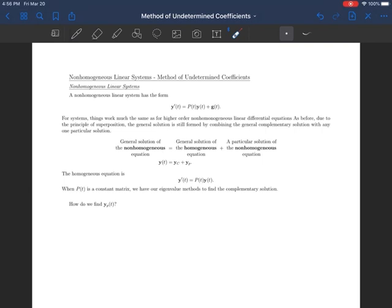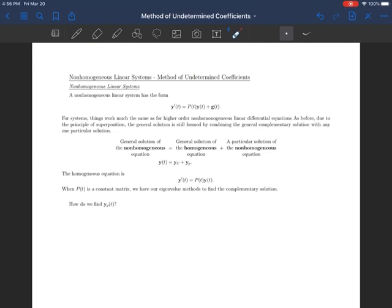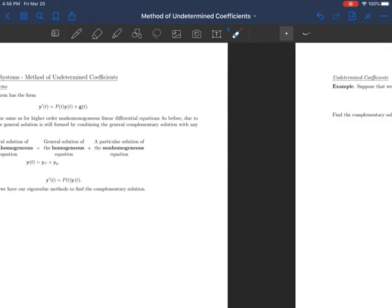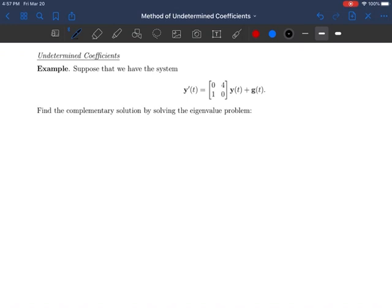I think the best way to think about the method of undetermined coefficients is by looking at an example. So here we go. Let's take this example. We have y prime of t equals [0, 4; 1, 0] y(t) plus g(t). I'm not specifying what the g of t is right now. That's okay because the first step that we have to go through is figuring out what the complementary solution would be. And we do that by solving the eigenvalue problem.